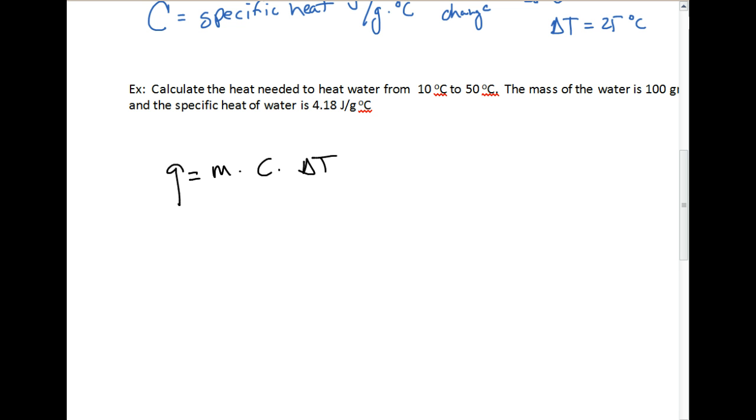We need to calculate the heat needed to heat water from 10 to 50. Here is our delta T value, and we're just going to subtract the two to get 40 degrees Celsius. It's always a positive value. The mass of the water is 100 grams, so there is our mass. It tells us the specific heat of water is 4.18, that is our C. All we have to do is plug these values into our equation. We're going to say q is equal to 100 grams, which is our mass, multiplied by the specific heat of water, 4.18 joules divided by grams times degrees Celsius, multiplied by our temperature change, 40 degrees Celsius.